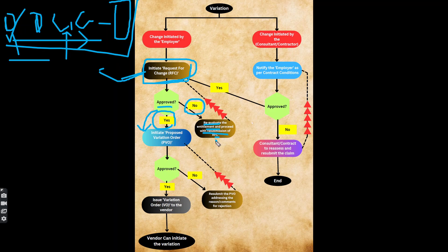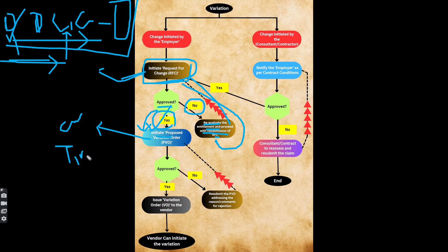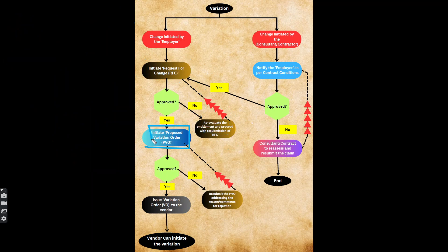If there is a mistake, they will rectify the RFC and then resubmit. If the approval is not approved, they will initiate the PVO — Proposed Variation Order. In the Proposed Variation Order there is a very exact cost, very exact timing, and very detailed information. If not approved at the PVO concept stage, it will go back for re-evaluation.